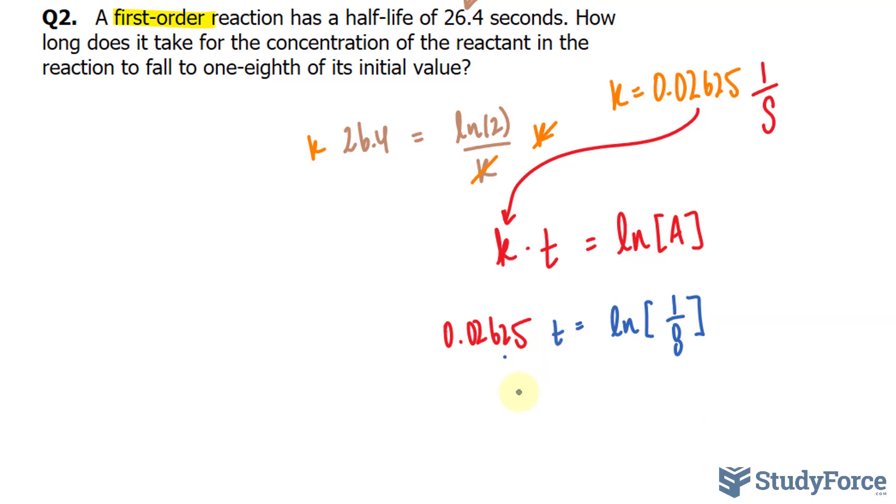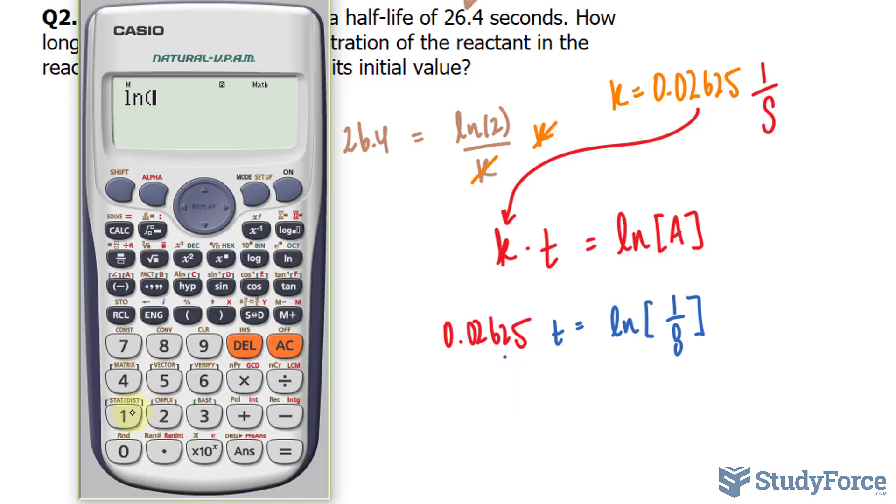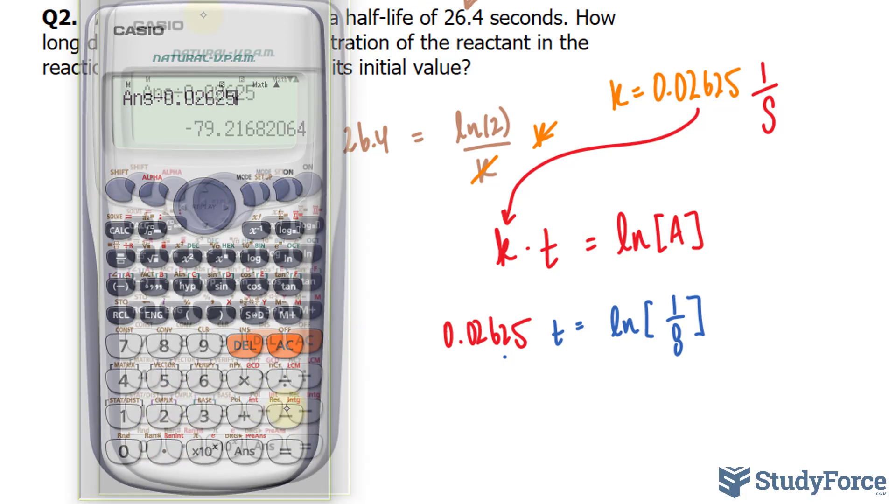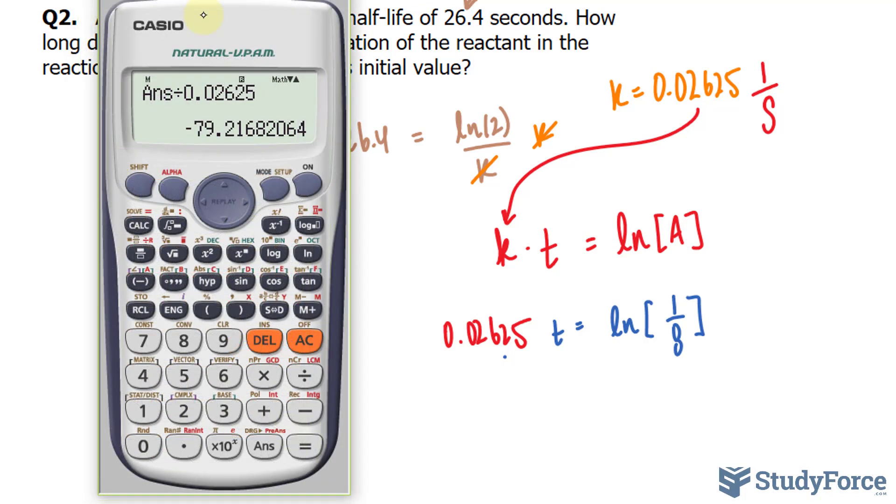So rearranging for T, I divide both sides by 0.0265. ln of one-over-eighth divided by the number 0.02625. We get negative 79.2168.